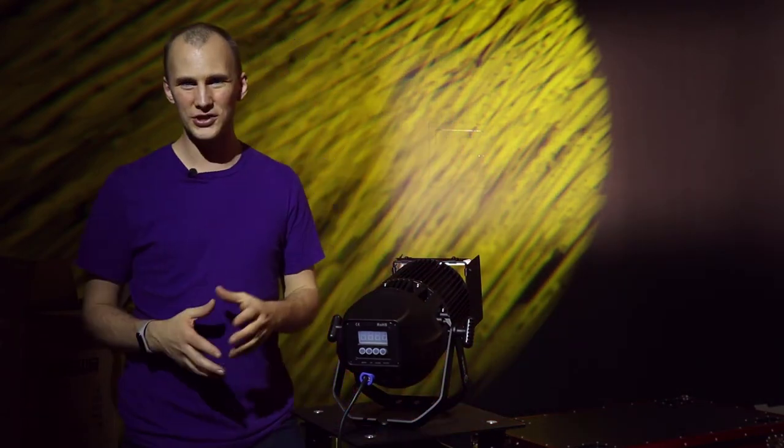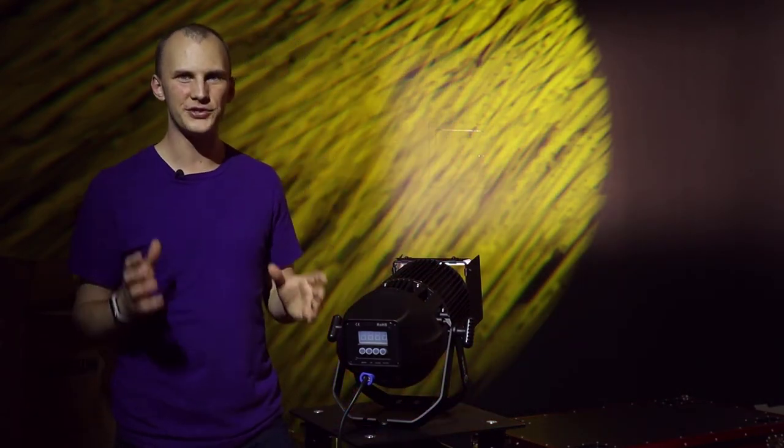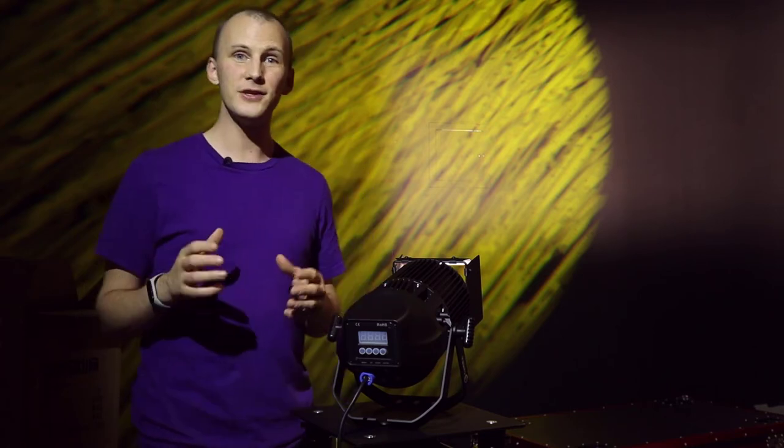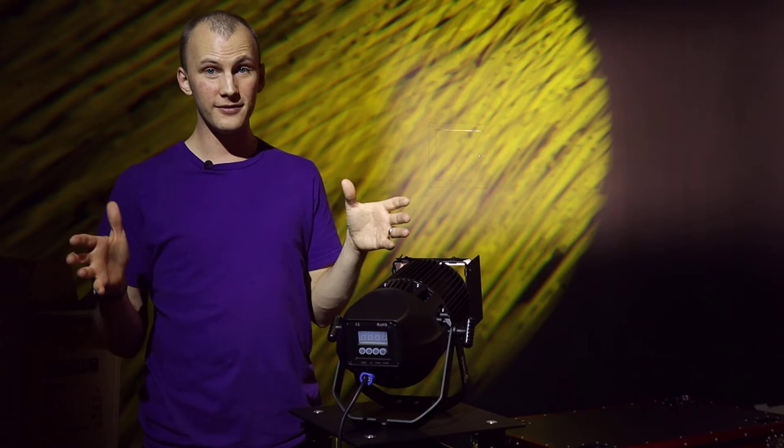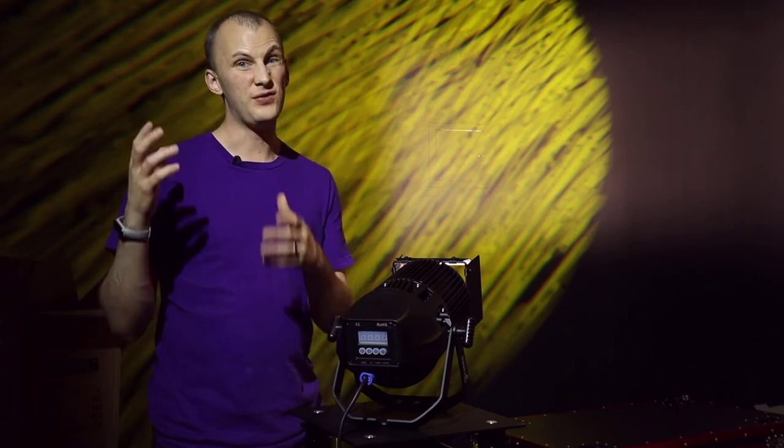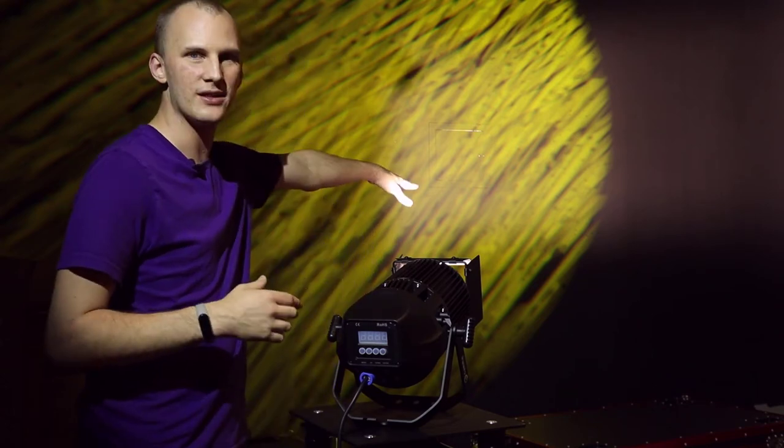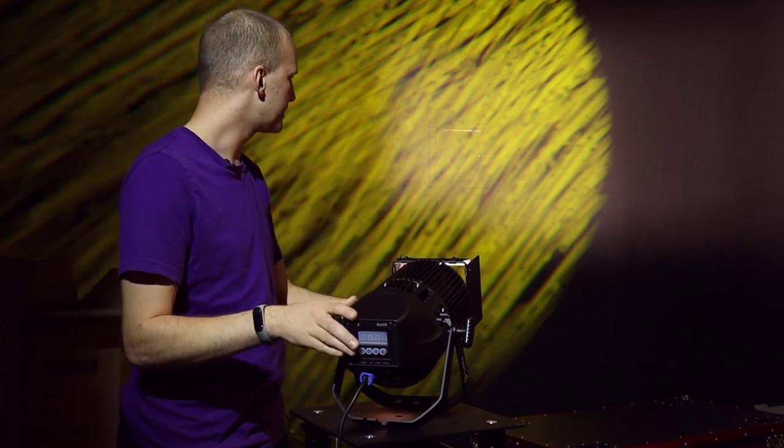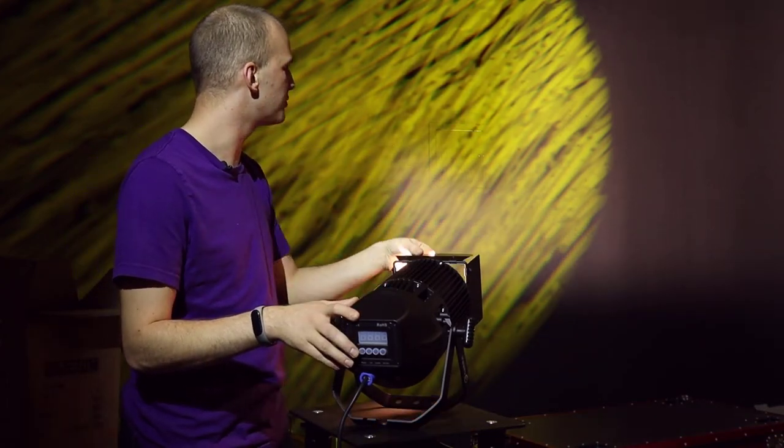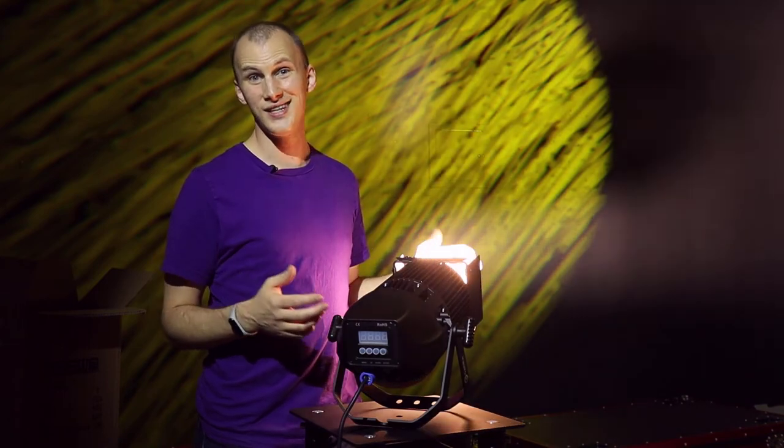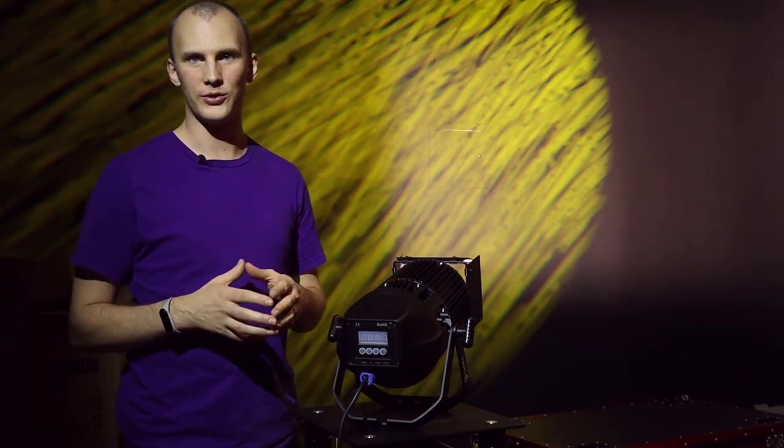That makes this fixture really kind of fill two voids. It fills the par slash fresnel slash nice soft wash light void. It does that well. But then, if you have a stage where you've got a screen in the backdrop or something like that, and you need a pretty hard edge on that barn door, you're going to have it with this light. It does that really well.